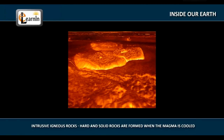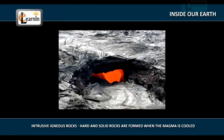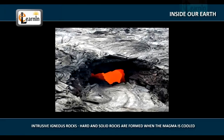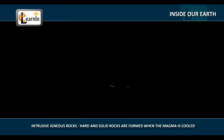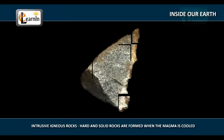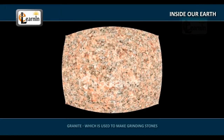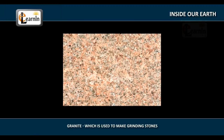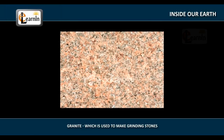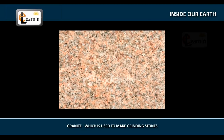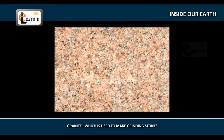When the magma cools down inside the crust, really hard and solid rocks are formed, which are called intrusive igneous rocks. An example of this type of rock is granite, which is used to make grinding stones.